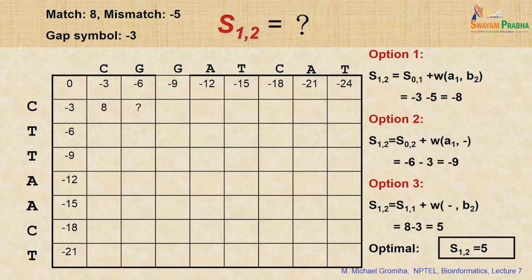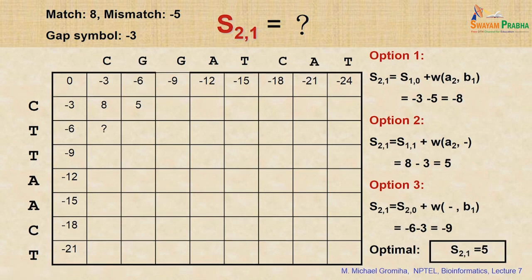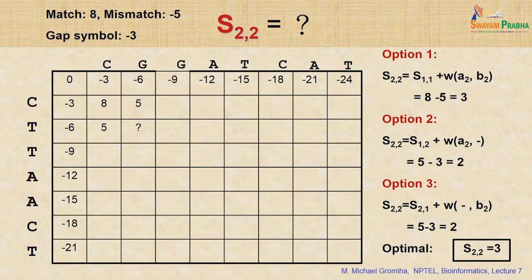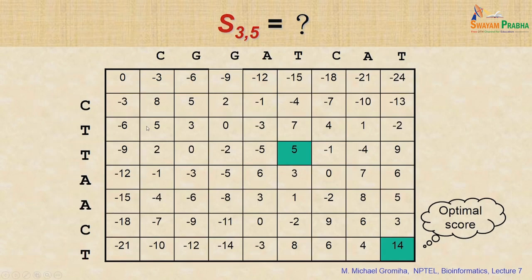Continuing to fill the matrix: the next cell has options giving minus 8, minus 9, and 5 — the maximum is 5, so put 5. The following cell also gives maximum 5. Then 5 minus 2 equals 3, 5 minus 3 equals 2, 5 minus 3 equals 2, and 8 minus 5 equals 3 for a mismatch. Taking the maximum gives 3. Filling the complete matrix, we finally get the optimum score of 14.